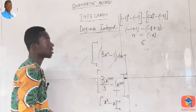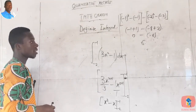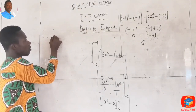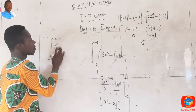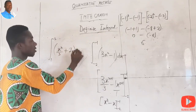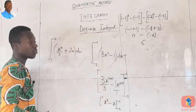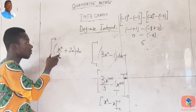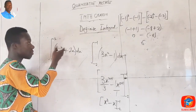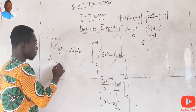Let's take another example. We are asked to integrate the function with limits from one to two: the integral of (x³/3 + 2x) dx. We use the same approach as before. The expression is already in its simplest form, so we go ahead and integrate it.